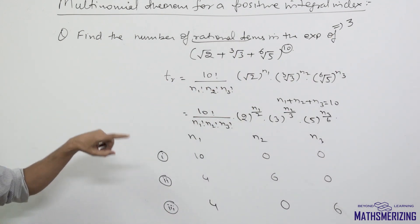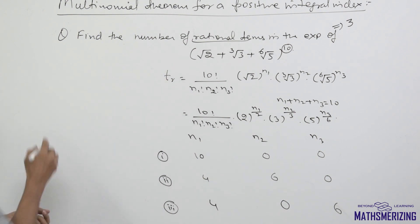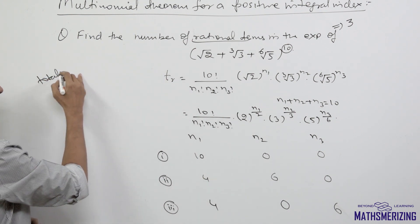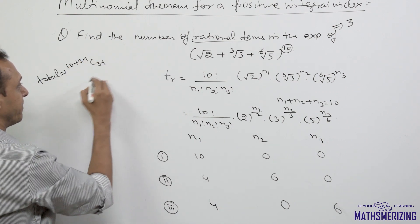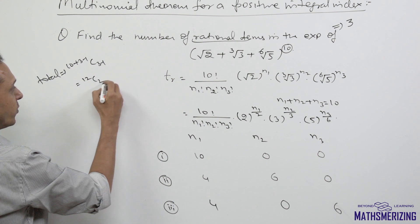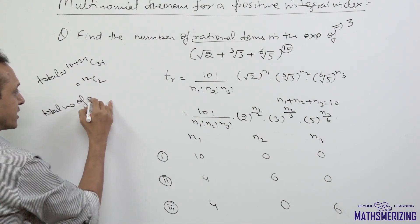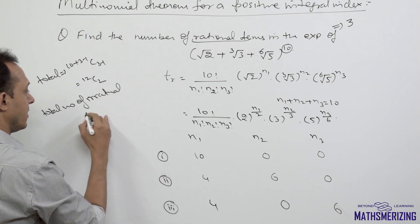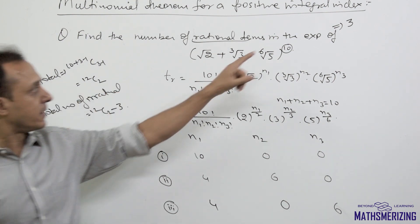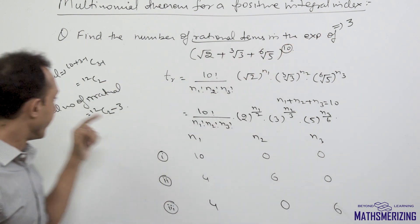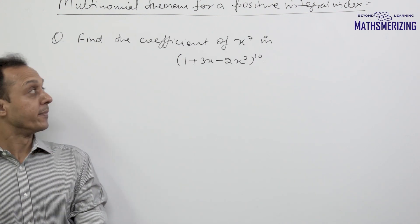For the number of irrational terms, we need total number of terms first. Total terms is given by n plus r minus 1 C r minus 1, where n is 10 and r is 3, giving 12C2. The number of irrational terms is therefore 12C2 minus 3, since there are three rational terms.